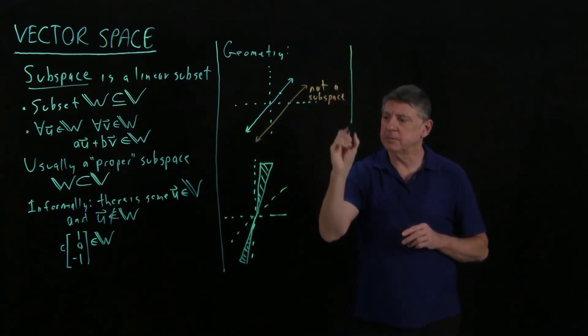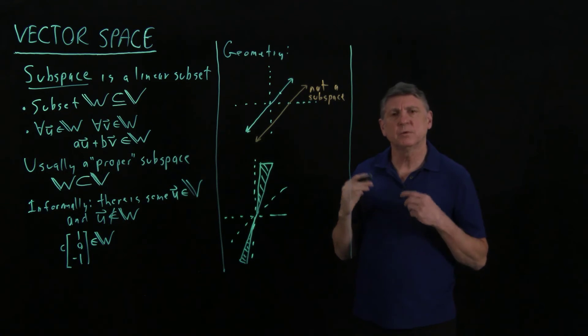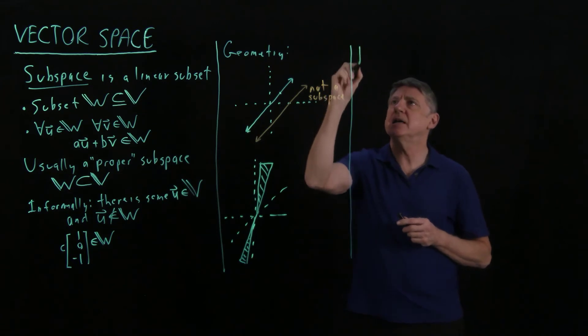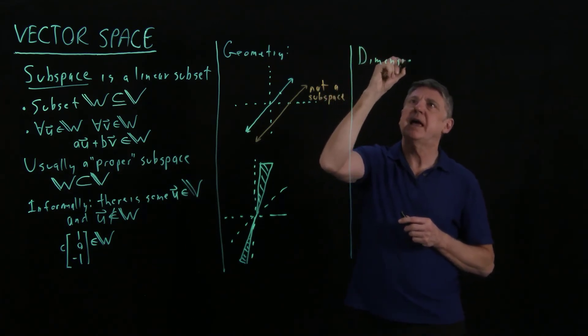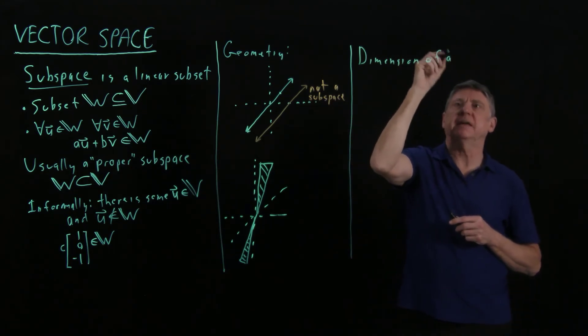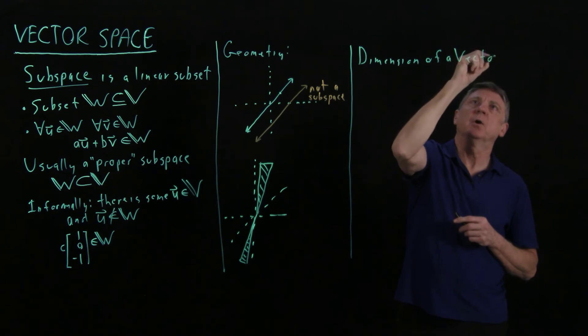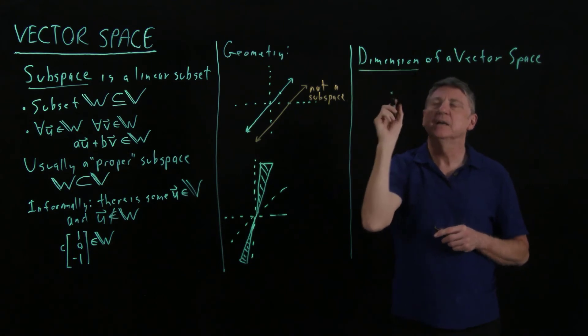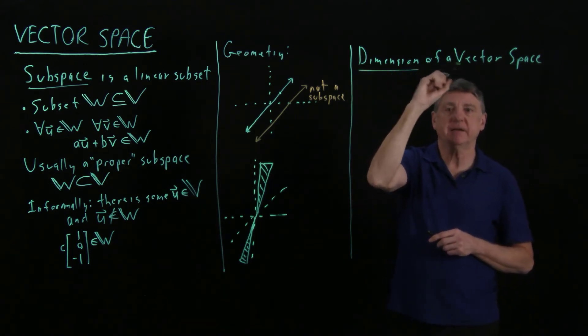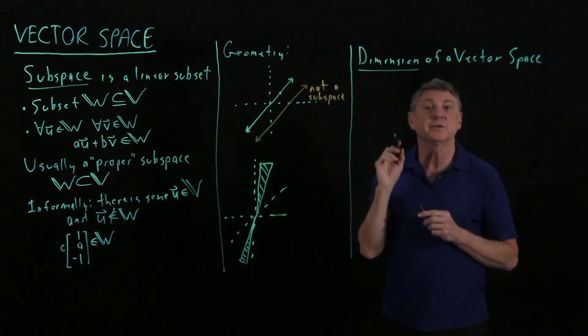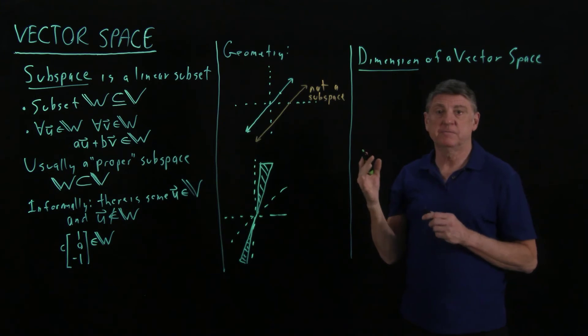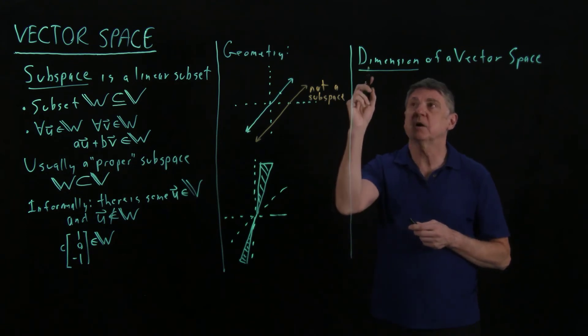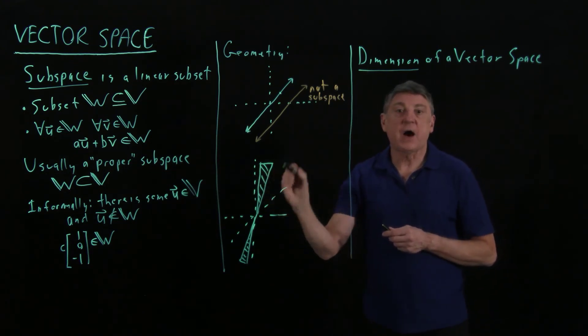There's an additional concept. We'll introduce it now, and we won't really be able to explore it fully until we get to further sessions, but that's the idea of a dimension. And dimension of a vector space. Now, here we're going to use English carefully, and what we mean is the word dimension applies to a vector space. The way that we'll use it, the word dimension does not apply to a vector. When we want to talk about a vector, we talk about its size, and that's the number of entries that are in the vector. When we talk about the dimension, we mean how big is the space.